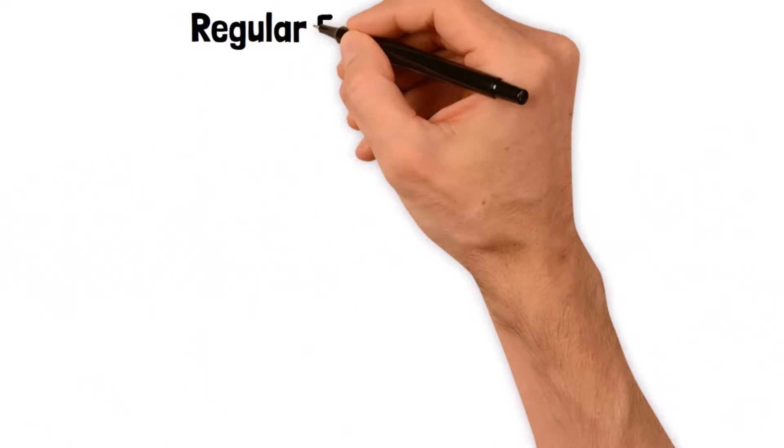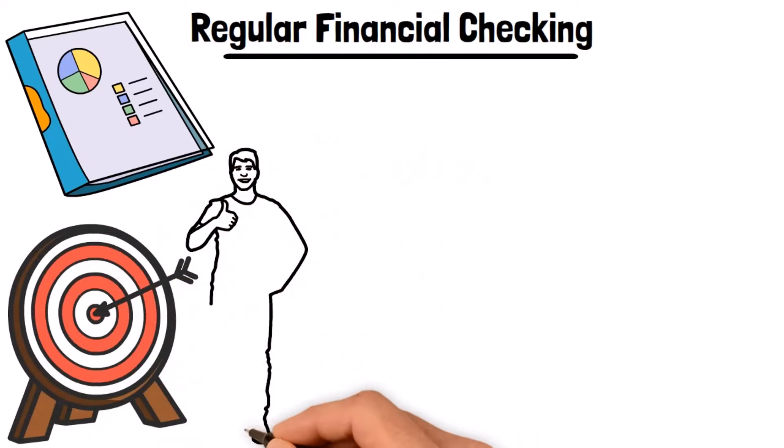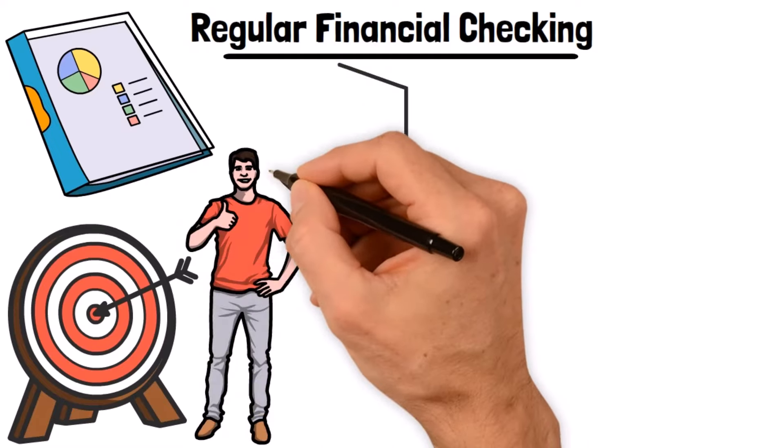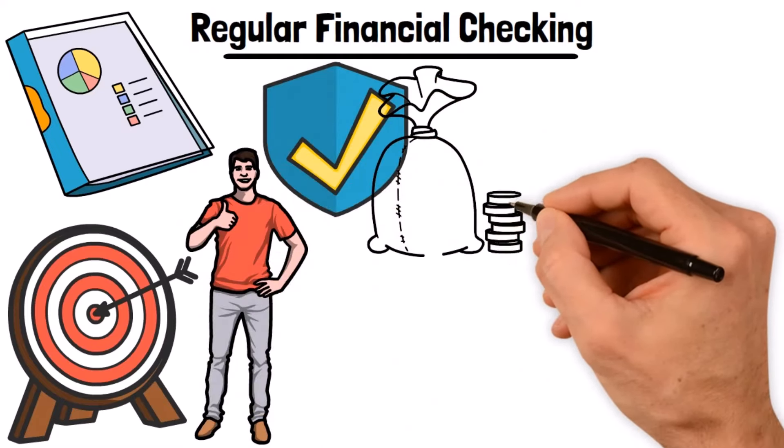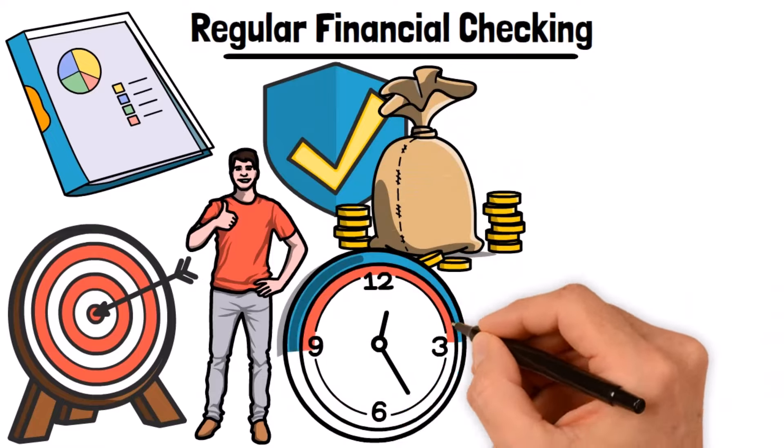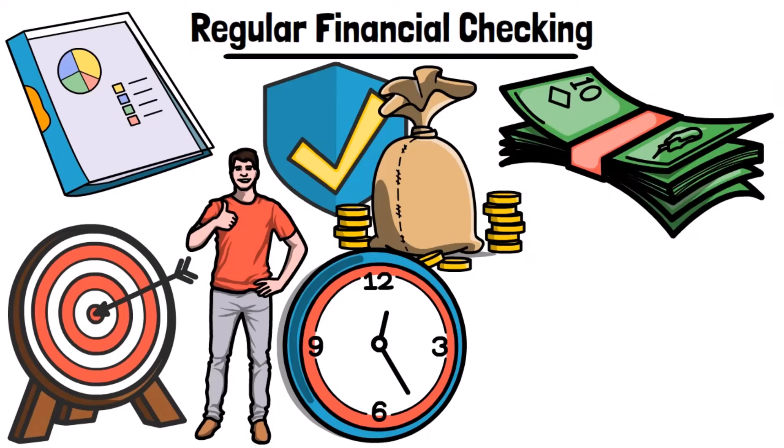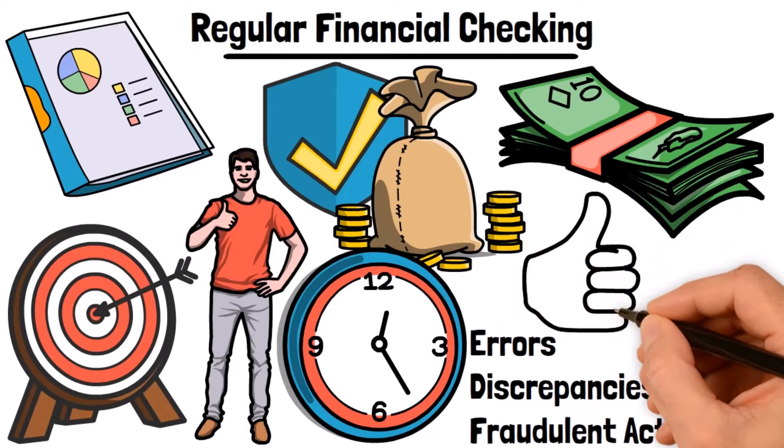Regular financial checking. Lastly, regularly track your progress towards your financial goals. Celebrate milestones along the way and make adjustments when necessary. Life circumstances and priorities change, so your financial plan should be flexible enough to accommodate them. Remember, changing your finances is an ongoing process. Moreover, regular financial checking allows you to spot any errors, discrepancies, or fraudulent activities early on. By being proactive and vigilant, you can protect yourself from financial mishaps and ensure your hard-earned money is secure.